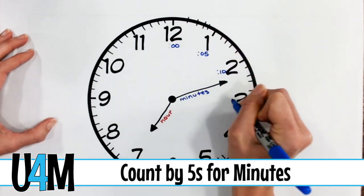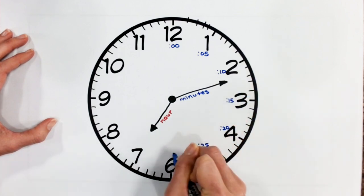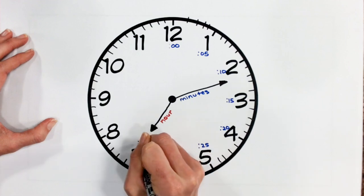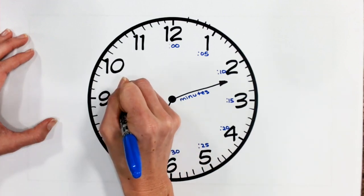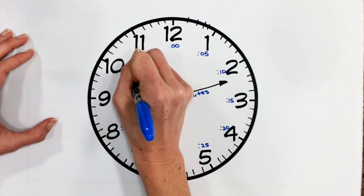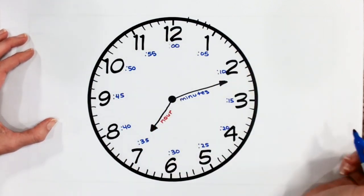5, 10, and 15, 20, 25, 30, 35, 40, 45, 50, 55, and back to zero.